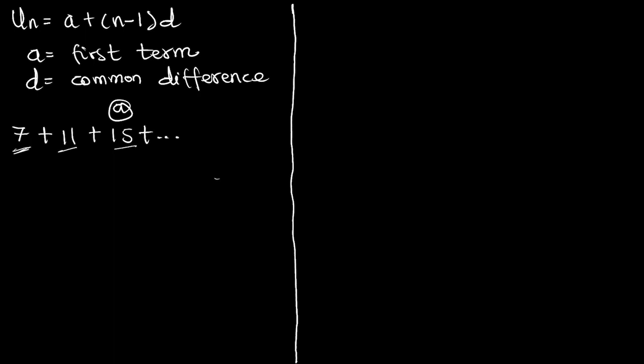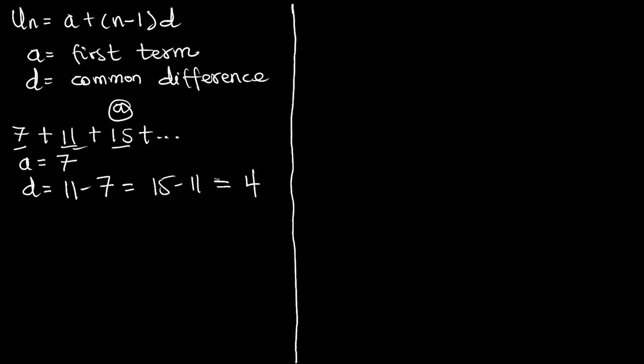To find the nth term we just have to write down our parameters — we are going to need our first term and our common difference. The first term, a, is just the number 7. For the common difference, you can take any two terms — either 11 and 15, or 7 and 11. Let's work with both ways. Taking 11 and 7: 11 minus 7 gives us 4, and 15 minus 11 is also 4. So the common difference d is 4.